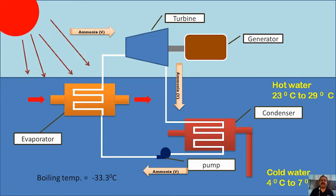There we get mechanical energy. This mechanical energy is converted into electrical energy through generator. The gas or vapor of ammonia which is coming out of the turbine now will pass through the condenser. Here we pass the cold water from the deep part of the ocean, so that the ammonia will again get converted into liquid form and it is again pumped into the evaporator.